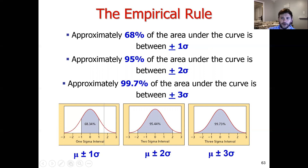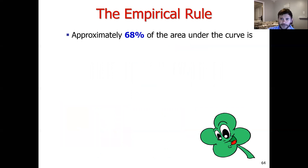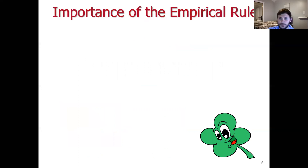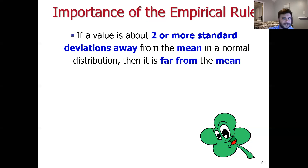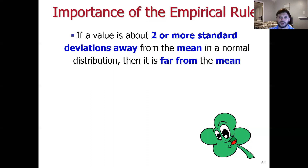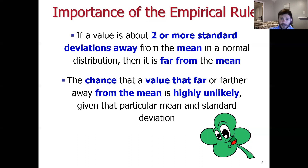The empirical rule is important — we started the course with it. If a value is two or more standard deviations away from the mean, remember that two standard deviations captures 95% of the area under the curve. Which means if you're farther than two standard deviations away, you're in the tails of that distribution — 5% remaining split between those two tails, so 2.5% each. The likelihood of observing something more than two standard deviations from the mean is very, very low, and at three standard deviations, even less likely.